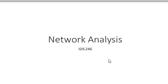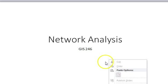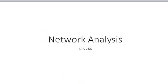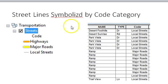This week we're going to start looking at network analysis, which will be needed for the final project. Network analysis looks at a set of pathways — it can be roads, pipes, electrical wiring, or streams — the idea being a connected network of lines with something moving through it.